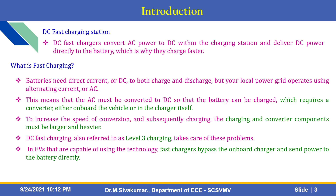DC fast charging, also referred to as level 3 charging, addresses these problems. In EVs that are capable of using this technology, fast chargers bypass the on-board charger and send power to the battery directly. DC fast chargers convert AC power to DC within the charging station and deliver DC power directly to the battery, which is why they charge faster.